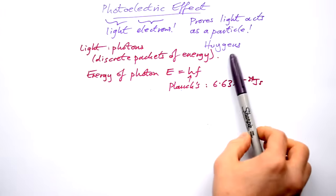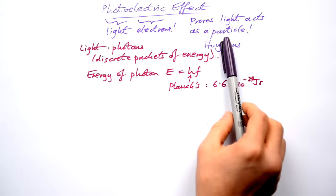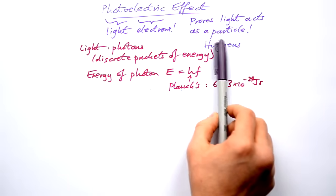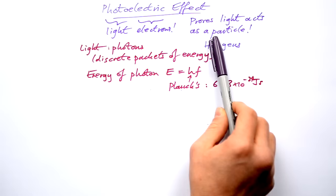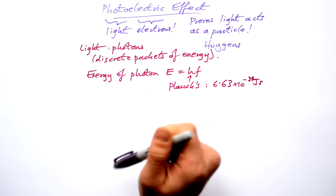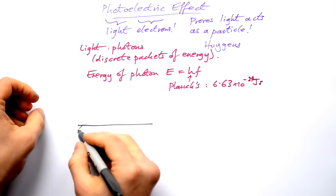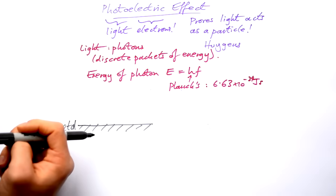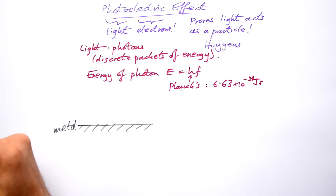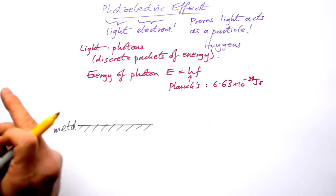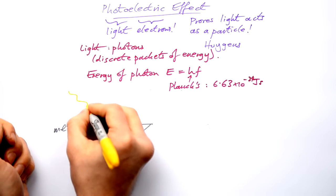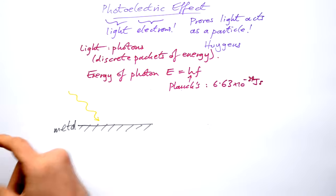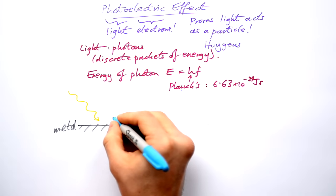Albert Einstein was the one to revive Newton's particle theory of light, but with a few changes. Einstein and people after him did experiments with light and electrons to prove this. We know that metals are lattices of ions surrounded by delocalized electrons.